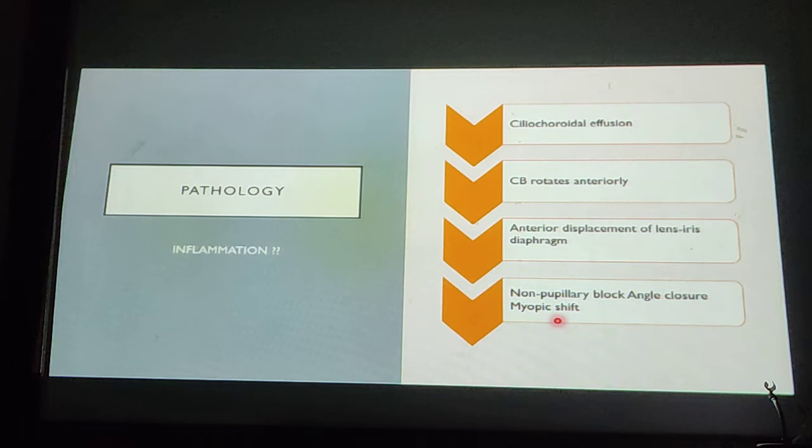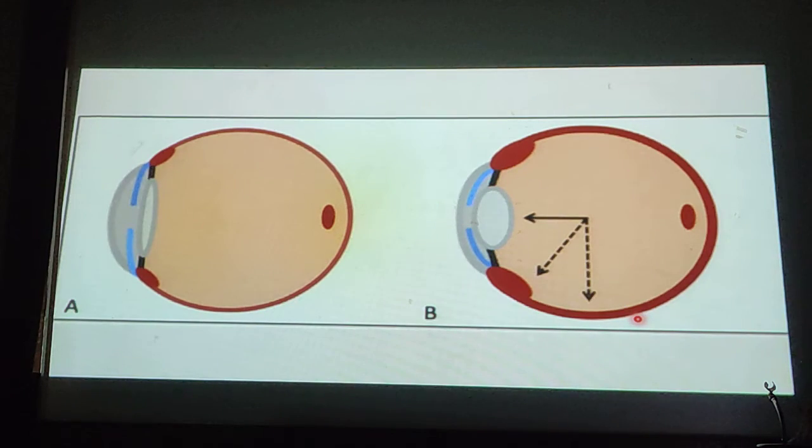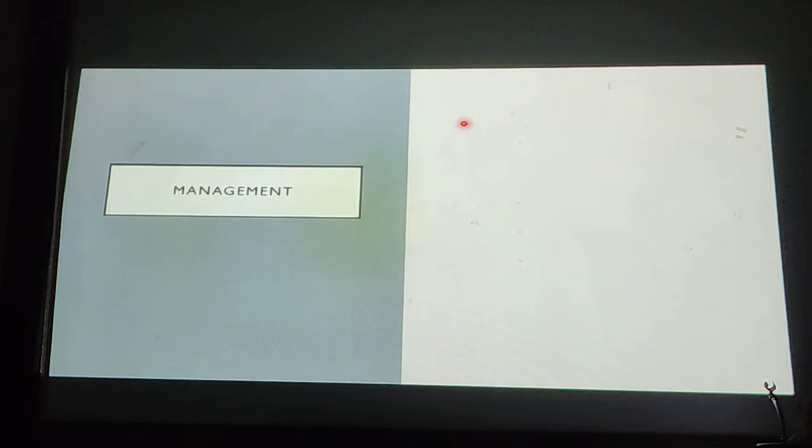Now the myopic shift is not only by the lens moving forward; it's also because the lens zonules become loosened, and this causes induced myopia. This is a diagram demonstrating effusion of the ciliary body and choroid, as well as anterior rotation of the lens and iris, causing acute angle closure.